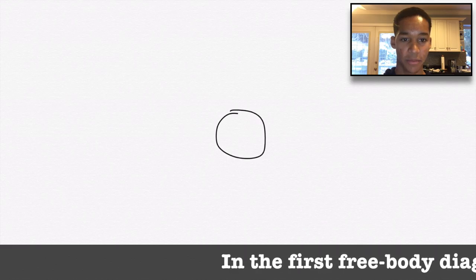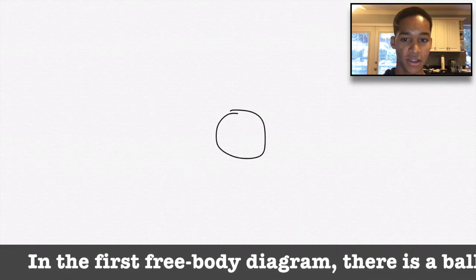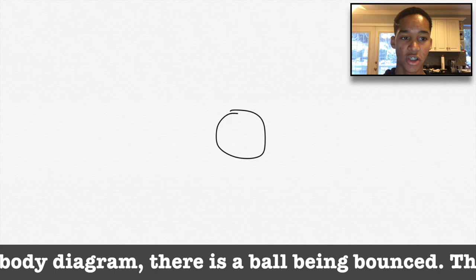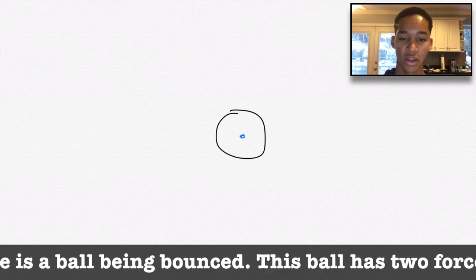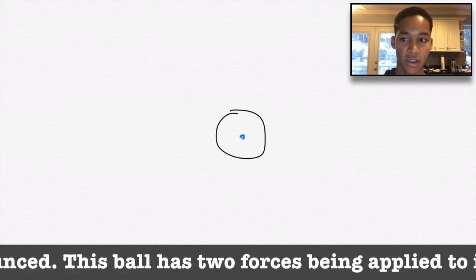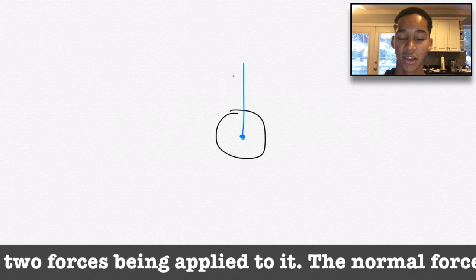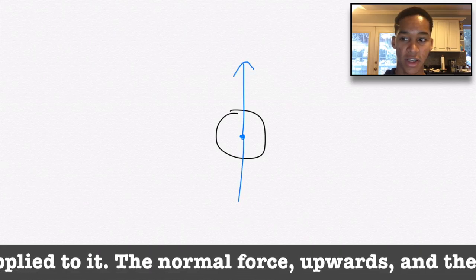In the first free body diagram, there is a ball being bounced. The ball has two forces being applied to it: the normal force upwards and the force of gravity downwards.